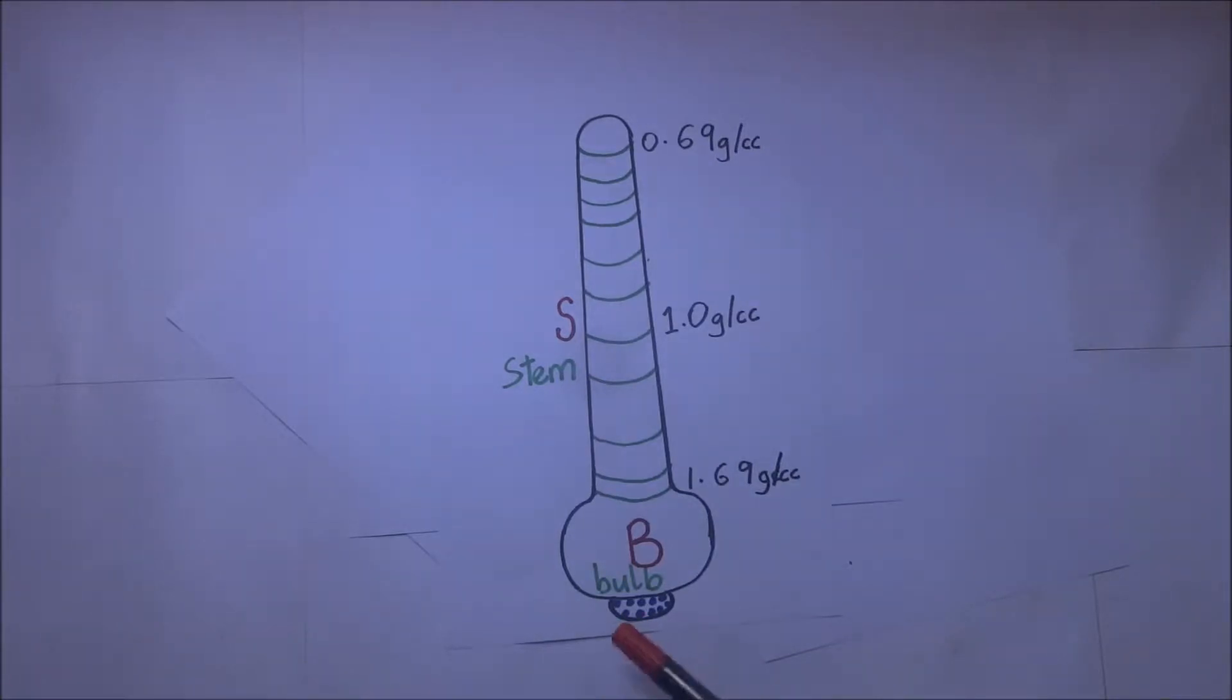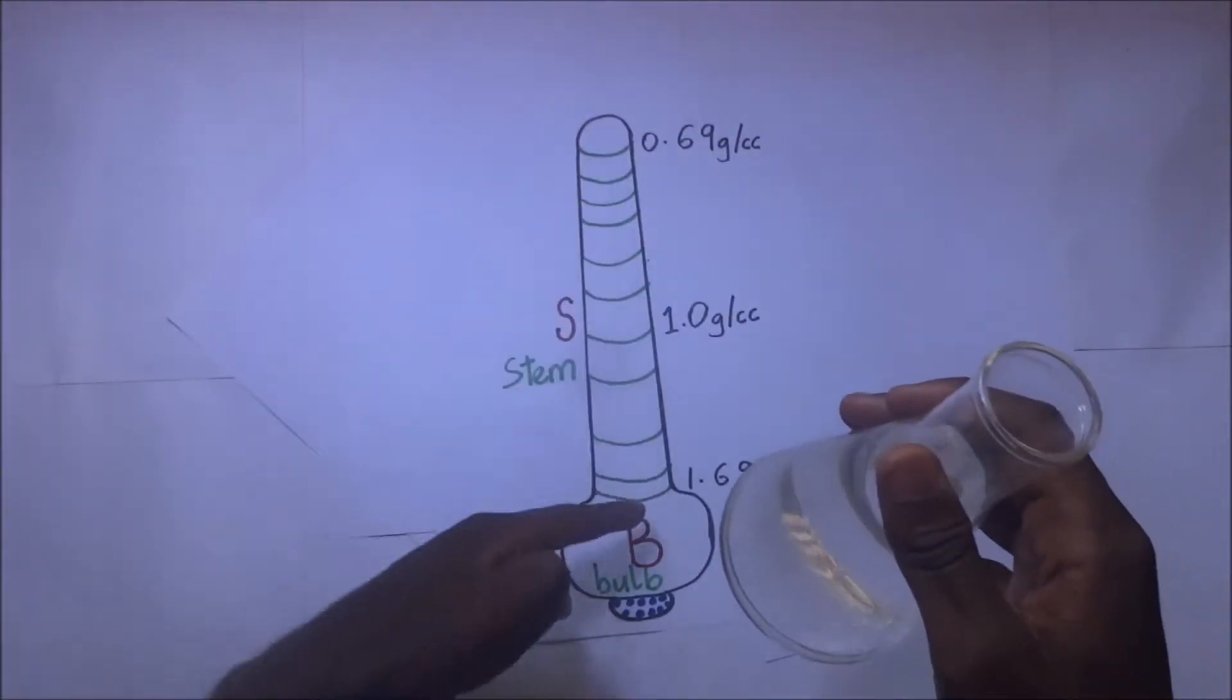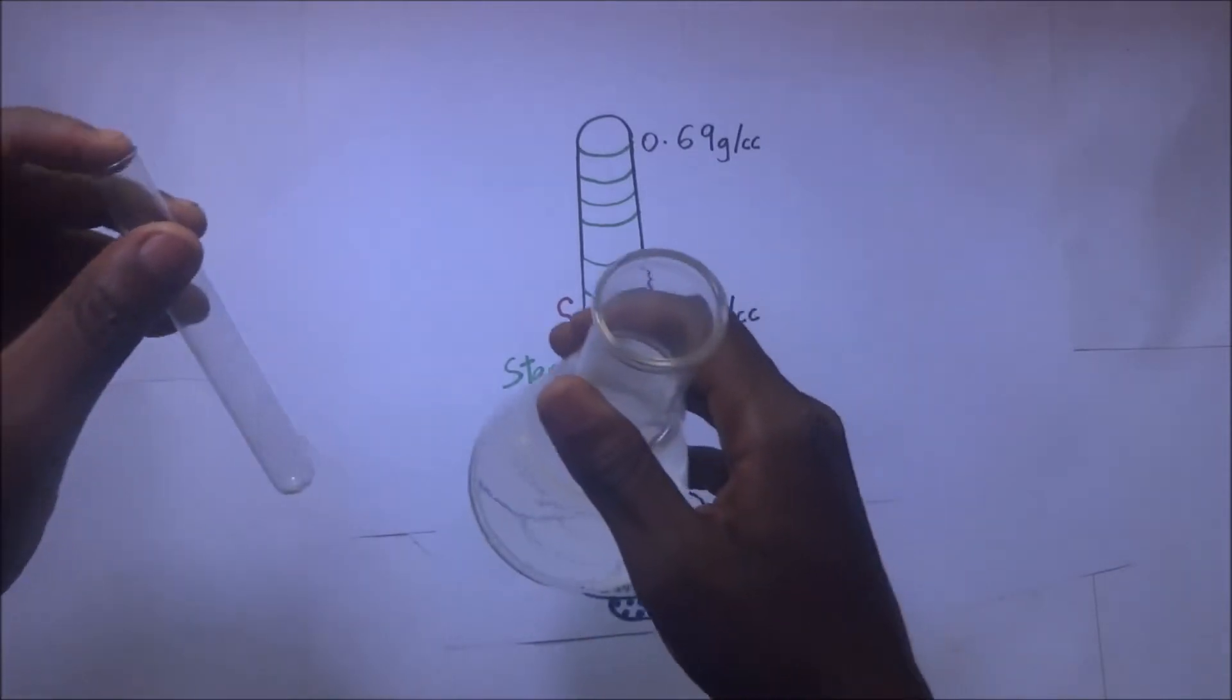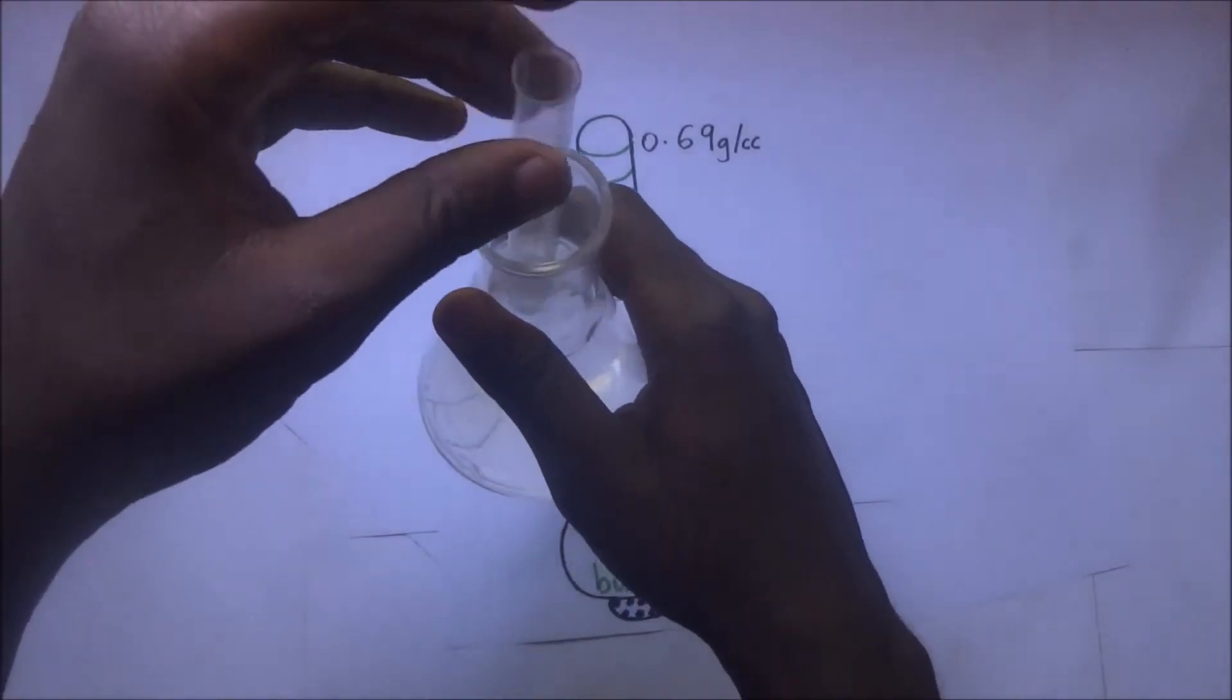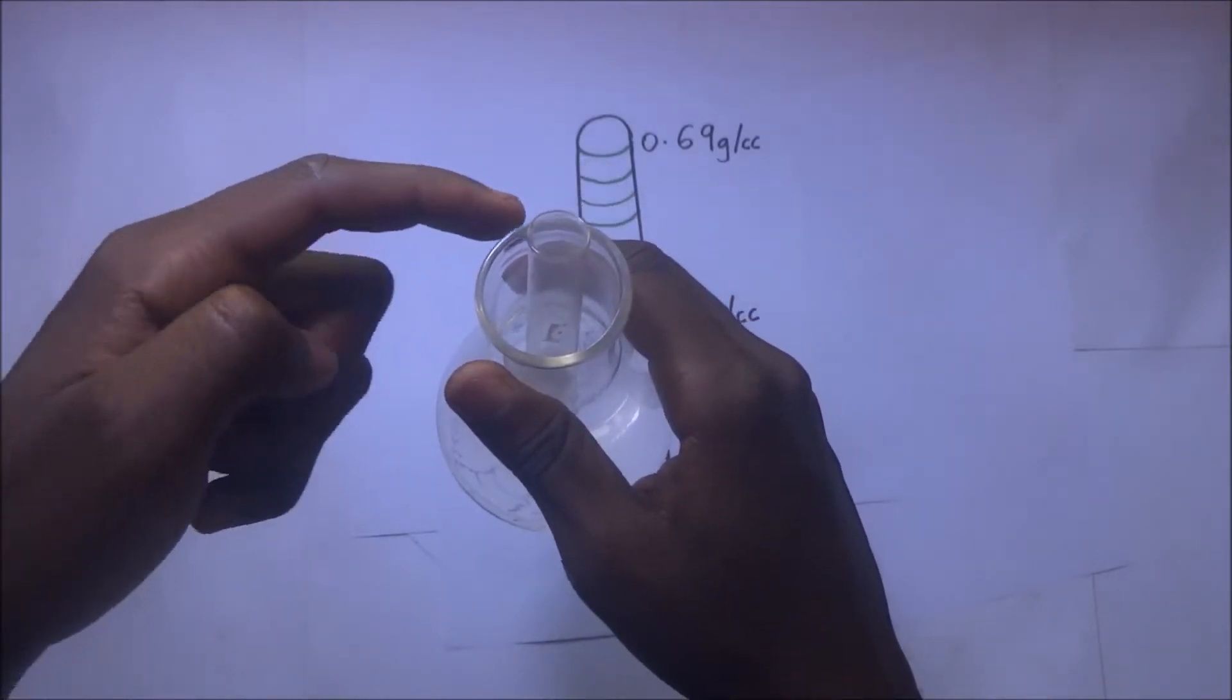When you look at the bottom of the bulb, we have some spots right here. Those spots are what we call lead shots, and these lead shots are meant to keep this bulb upright when it is floating.